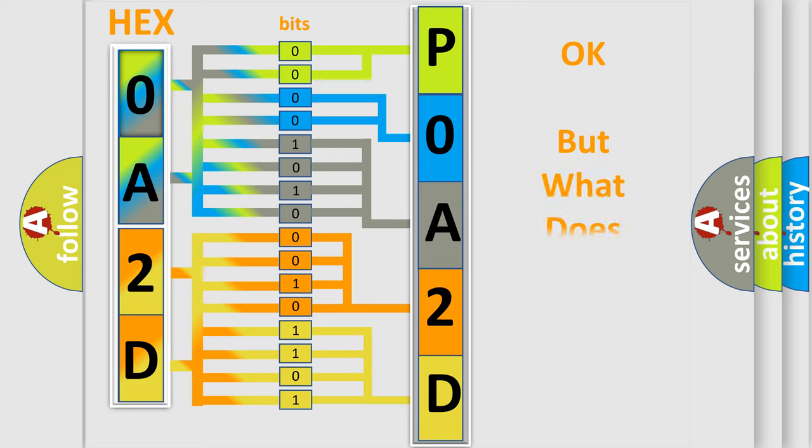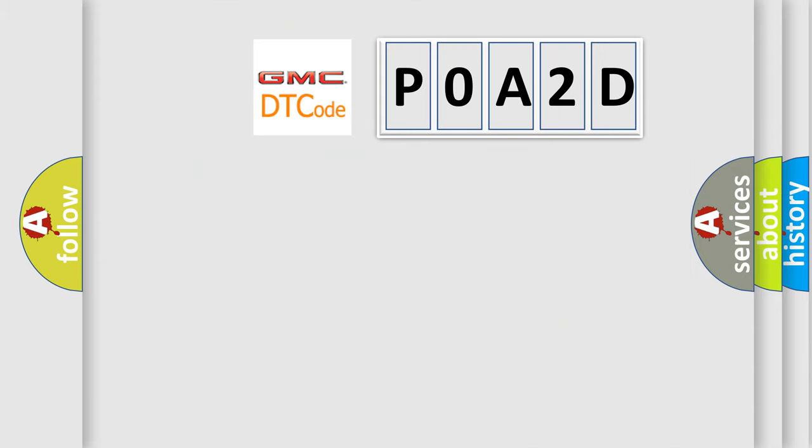The number itself does not make sense to us if we cannot assign information about what it actually expresses. So, what does the Diagnostic Trouble Code P0A2D interpret specifically for GMC car manufacturers?